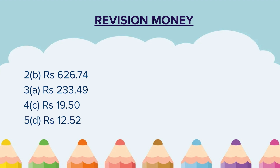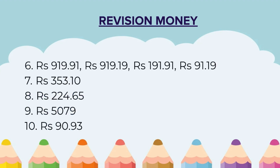Question 2: The correct option is B. Question 3: The correct answer is A. Question 4: The correct answer is C. Question 5: The correct answer is D. Question 6 was arranging in descending order. The correct order is: rupees 919.91, then rupees 919.19, then rupees 191.91, and lastly rupees 91.19.